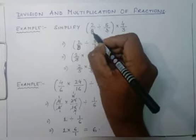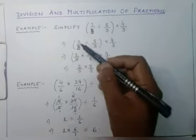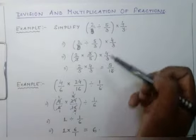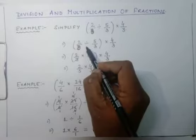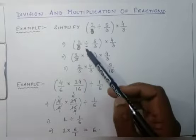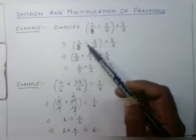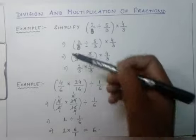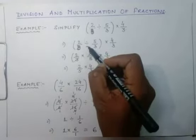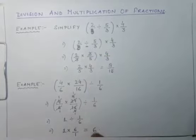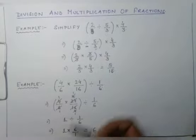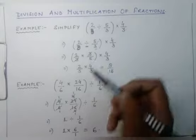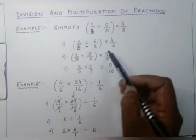So it is 2/3 — not 8, it is 2/3 — divided by 5/3 inside the bracket, multiplied by 4/3. There is a division sign inside the bracket. As I told you, we solve inside the bracket first. So 2/3 divided by 5/3: when I convert the division sign to multiplication, the divisor becomes its reciprocal, giving 3/5. Then 3 and 3 cancel, leaving 2/5.